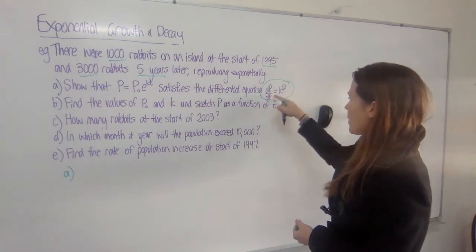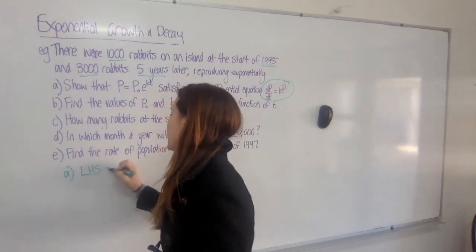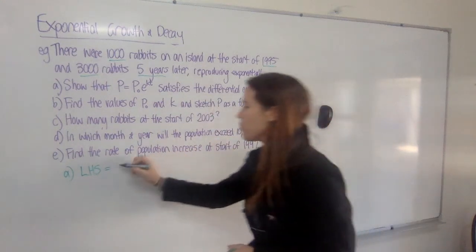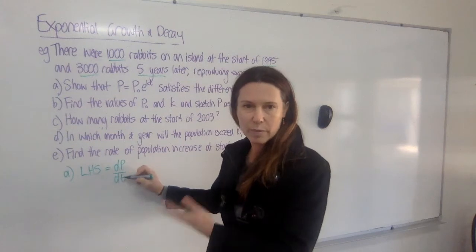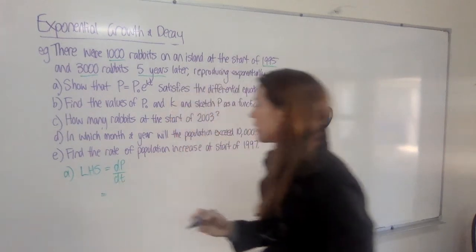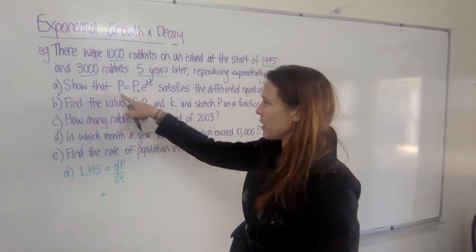We need to start. We're showing this. So start with the left-hand side. The left-hand side equals dP/dt, which is the change in the population with respect to time. And that equals, well, can we sub in here a value for P? Yes.